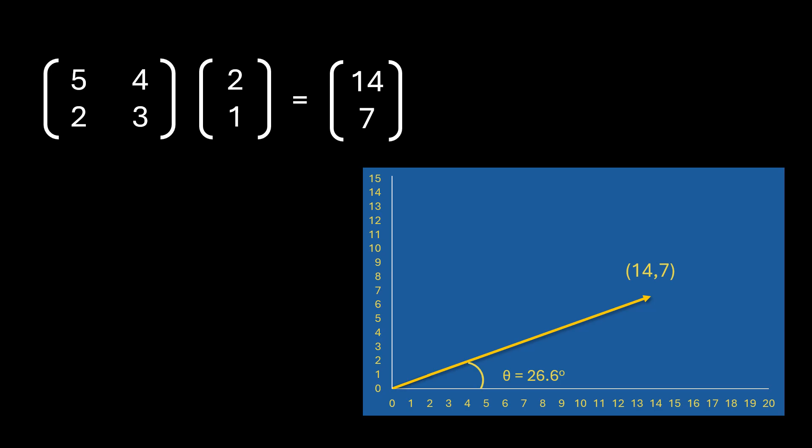The new coordinates are [14, 7] but its angle still remains the same, 26.6 degrees. So this new vector [14, 7] can also be written as 7 multiplied by [2, 1]. Isn't [2, 1] the original vector we started off with? Its magnitude has increased by a factor of 7 but its direction still remains the same. So this vector which only increases or decreases in magnitude but does not change its line of action or direction is called eigenvector.